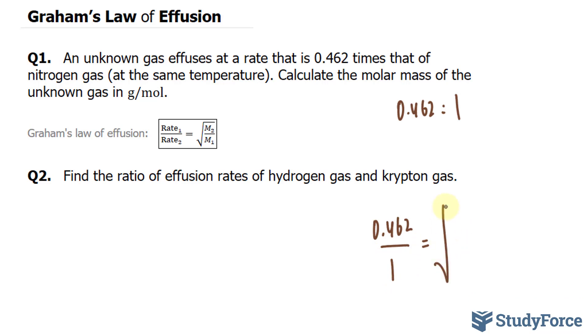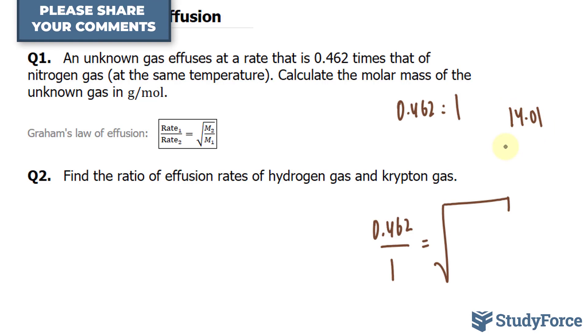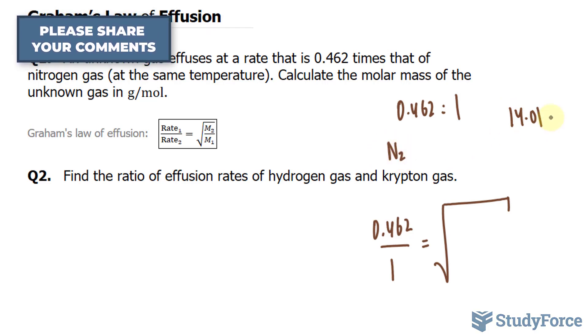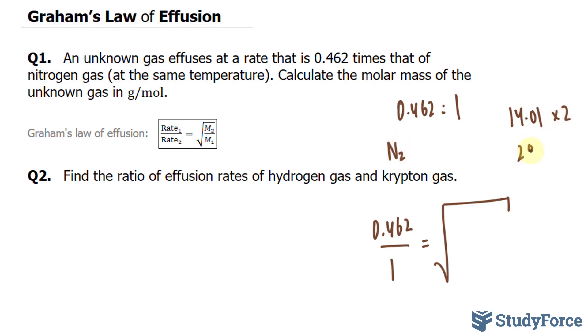This is equal to the square root of the molar mass of nitrogen. The molar mass of one nitrogen atom is 14.01. And since nitrogen gas is a diatomic molecule, N2, we multiply this by 2, which gives us 28.02.